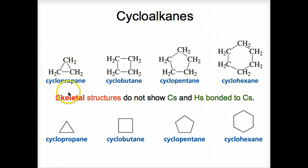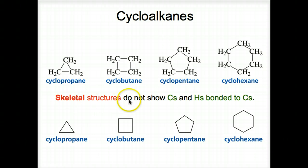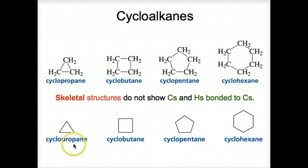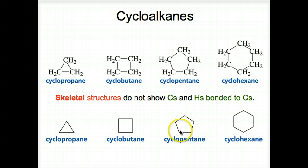This slide gives us some examples of cyclic alkanes. Notice they are in a cyclic form. Skeletal structures do not show carbons and hydrogens bonded to the carbons — no hydrogens are shown. This is a three-carbon cyclic structure. Cyclobutane has four carbons, one at each intersection of the lines — we've also called these bond line drawings. Cyclopentane and cyclohexane are also shown on this slide.